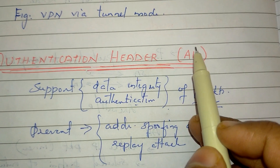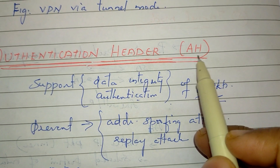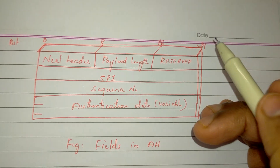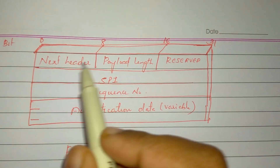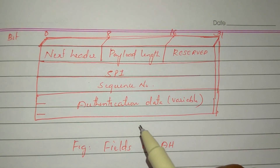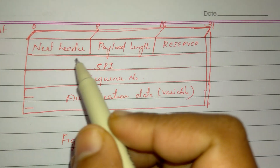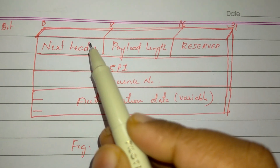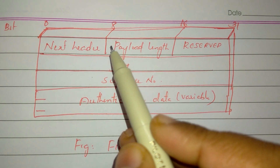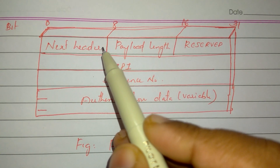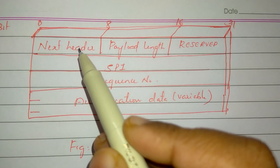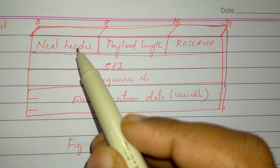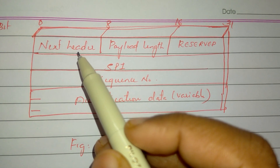We will look at the authentication header fields. There is a field called next header. This is an 8-bit next header. We will identify the header as the next header.